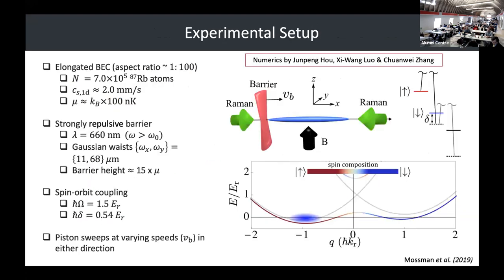The way we do this is to implement spin-orbit coupling in our system. We have a slightly different system — a very elongated BEC with an aspect ratio of about 100 to 1, and two counterpropagating Raman beams. This allows spin-orbit coupling that's constant along the entire BEC. Then we have a repulsive potential: a 660-nanometer diode laser focused down at the atoms and controlled using a galvanometer, which is a little rotating mirror. This allows us to sweep the barrier across the BEC.